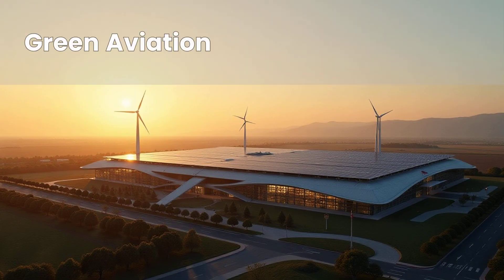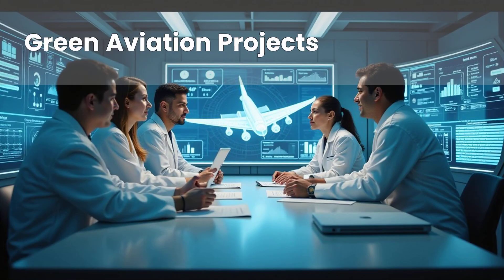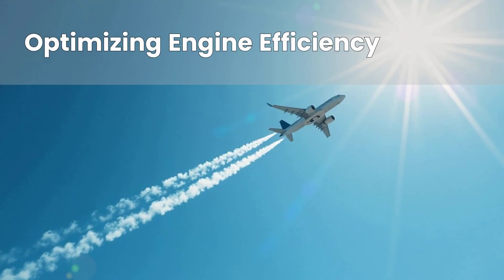NASA is at the forefront of research into green aviation projects. These projects aim to reduce the environmental impact of aviation, including the impact of contrails. One key focus is optimising engine efficiency — by developing more efficient engines, less fuel is burned, resulting in reduced emissions and fewer contrails.